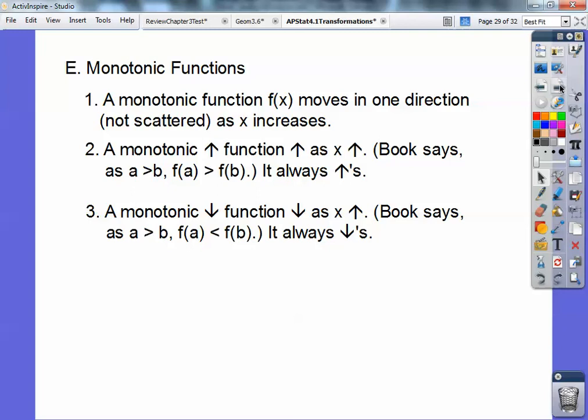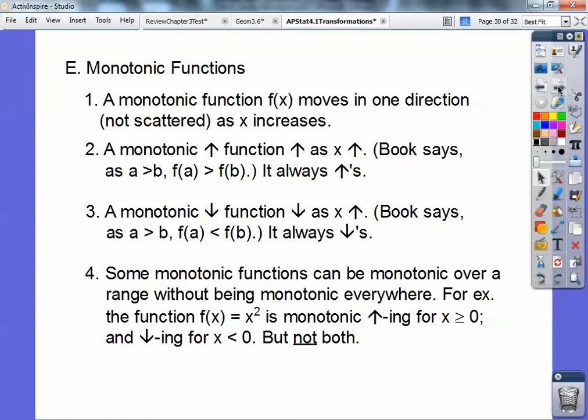A monotonic decreasing function decreases when Y decreases as X increases. The book says as A is bigger than B, which just means as X increases, then f(a) is less than f(b), which just means Y is decreasing. So it's decreasing down like that. That would be a monotonic decreasing function. Some monotonic functions can be monotonic over a range without being monotonic everywhere. For example, the function f(x) equals x squared - remember a parabola? It would be monotonically decreasing all the way to zero, and then when you get to zero it starts doing a monotonic increasing right there.